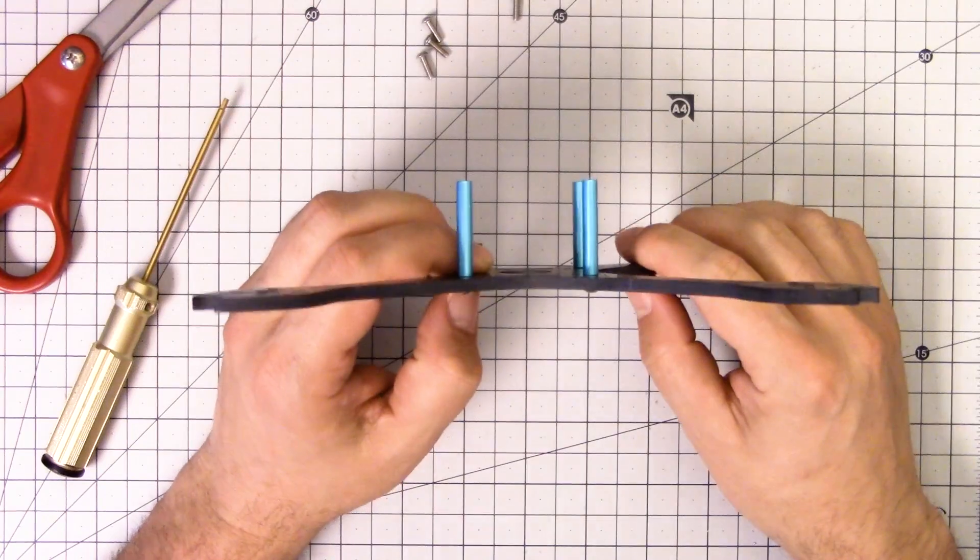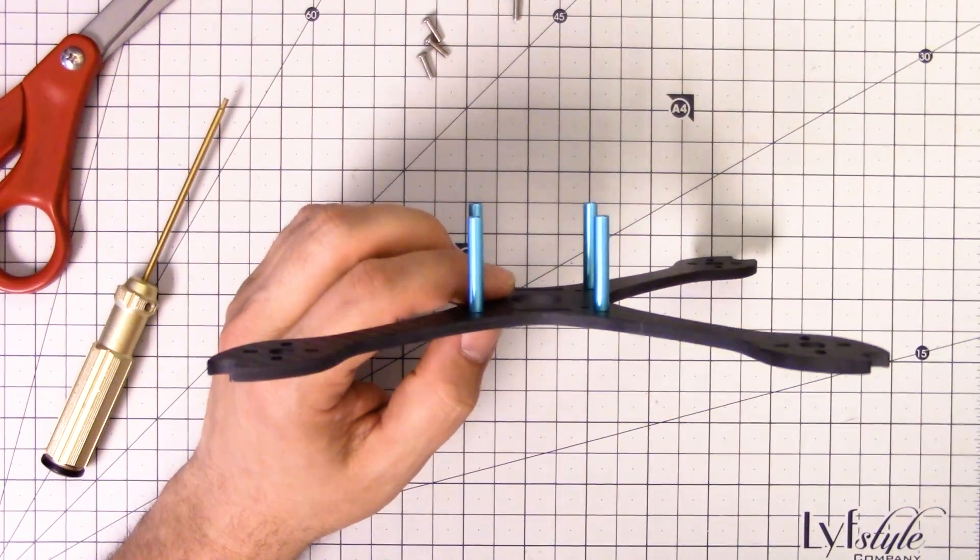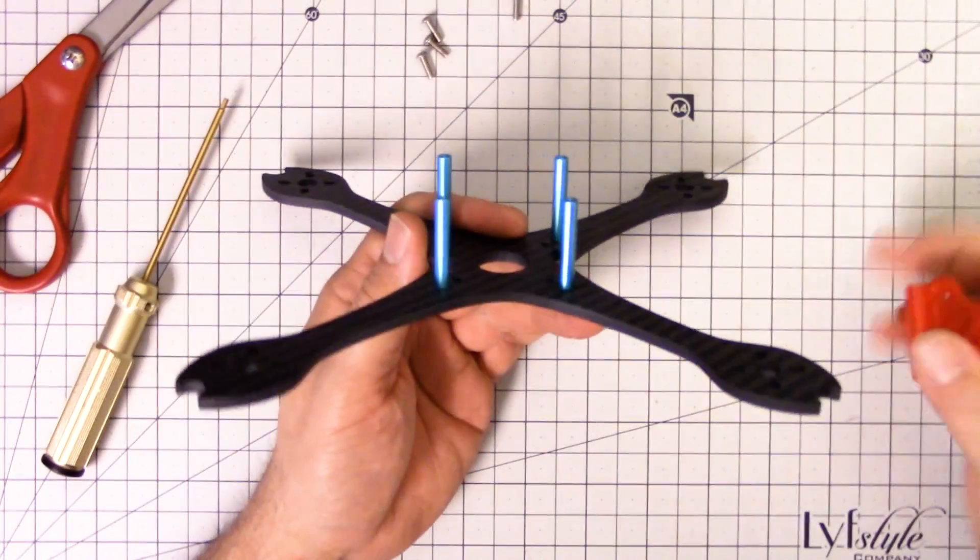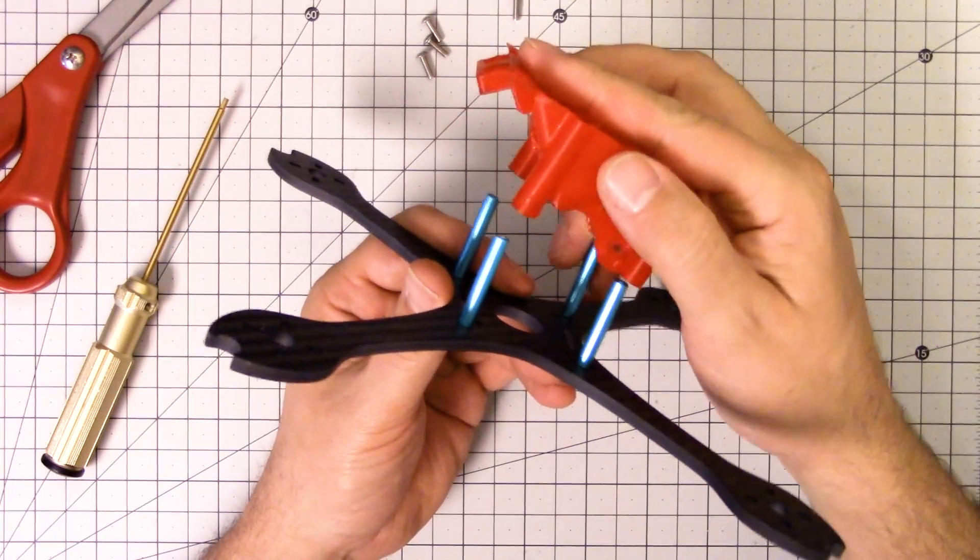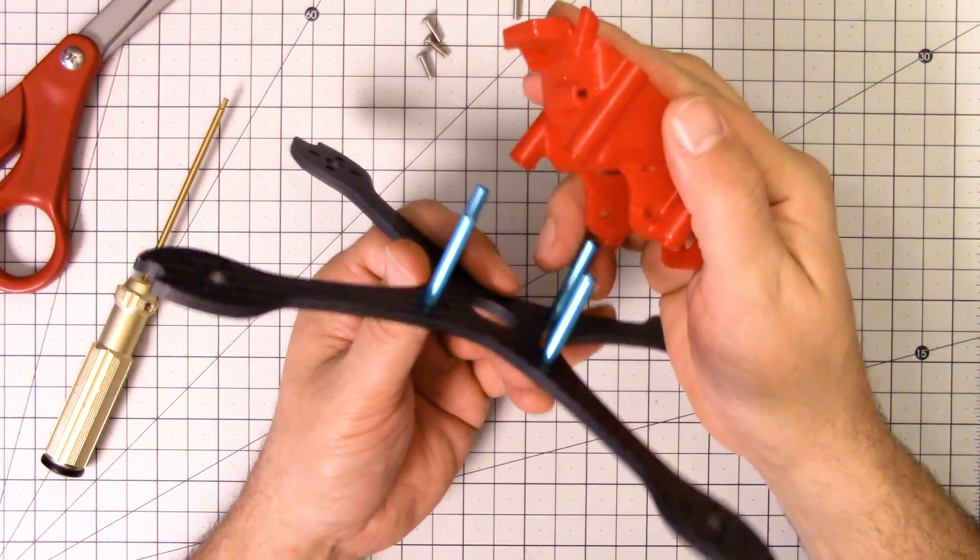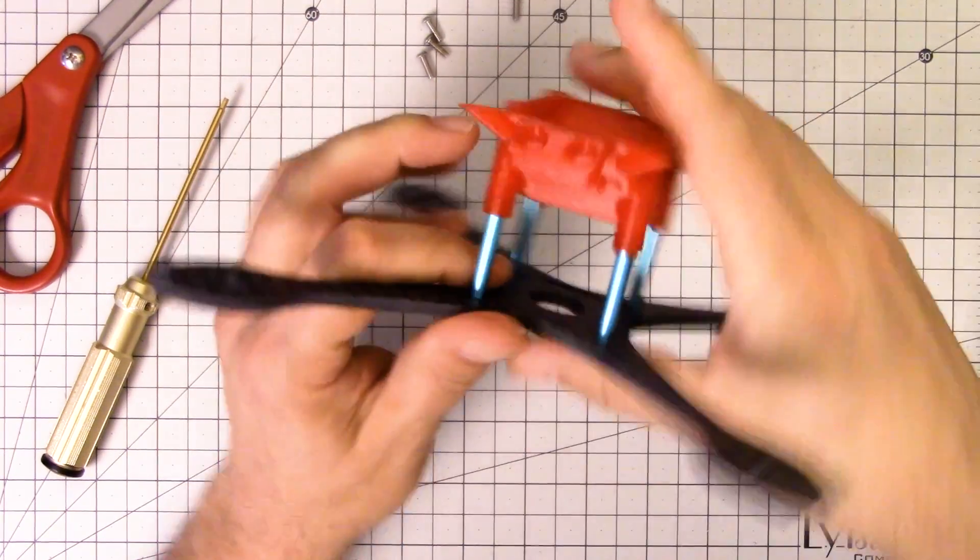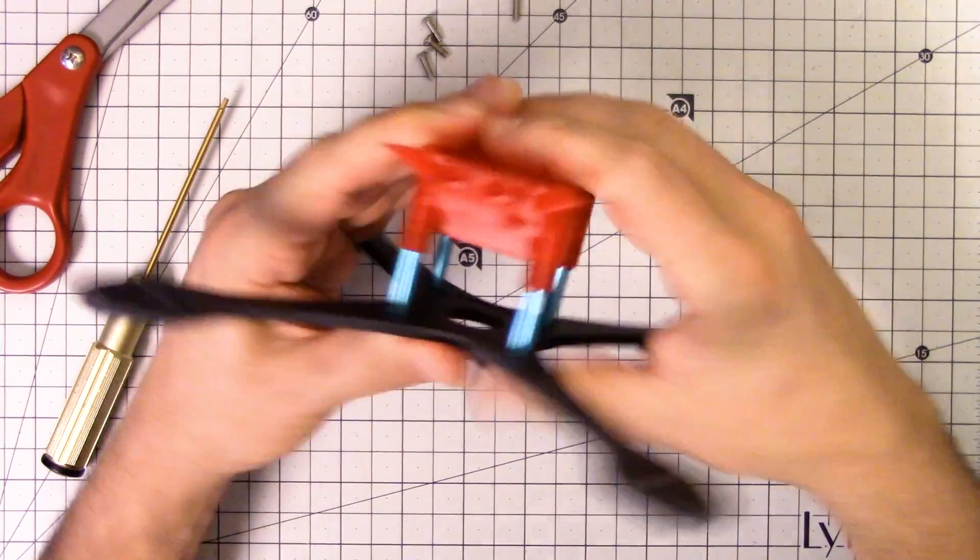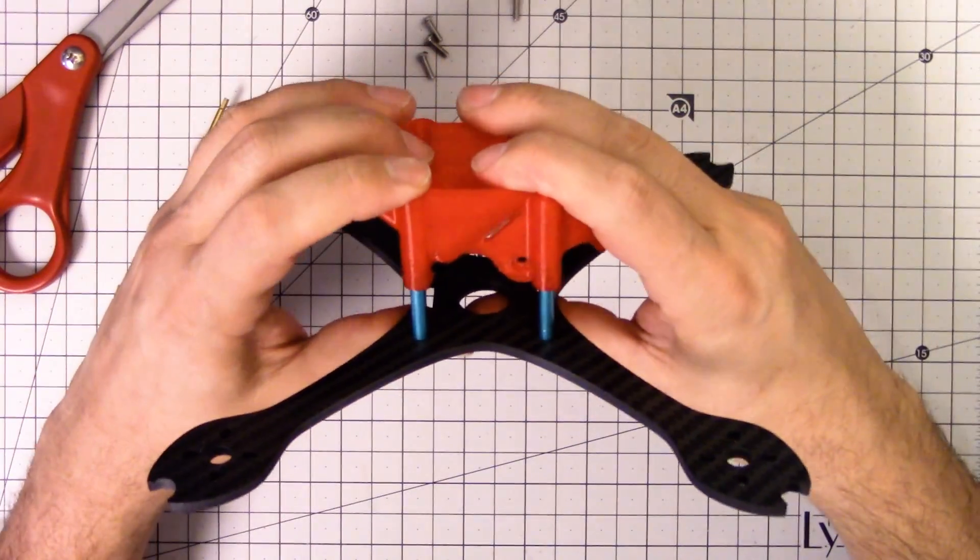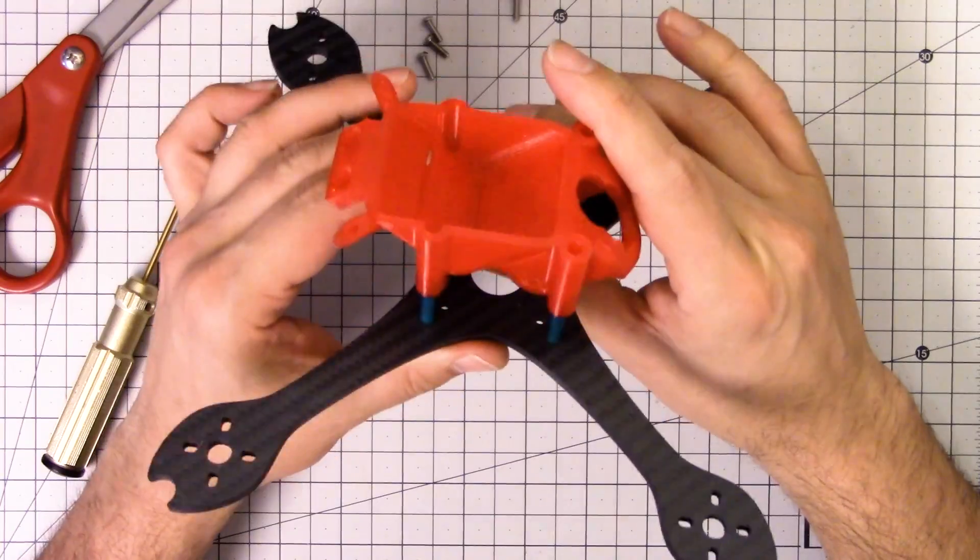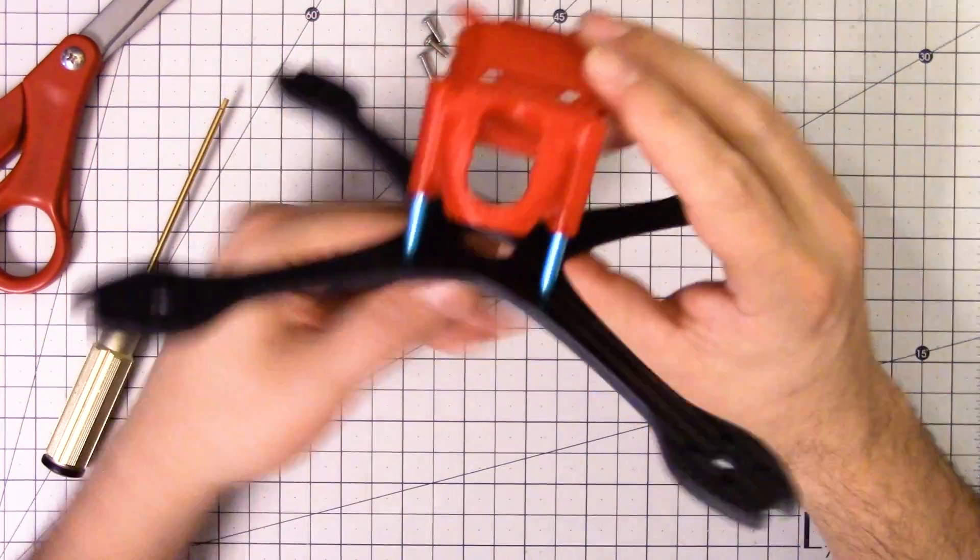Now that I've got the standoffs installed I can show you how this fits down. So you got your flight controller and all that stuff in your stack and then this TPU printed part just slides down on top like so.